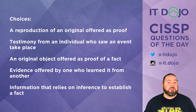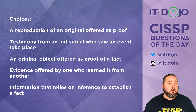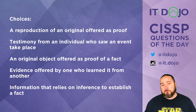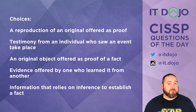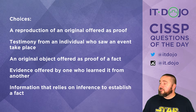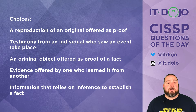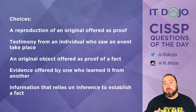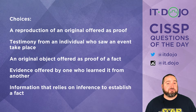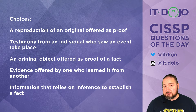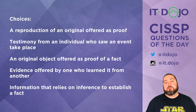The first choice says it is a reproduction of original evidence offered as proof — no, that definition is more appropriately aligned with secondary evidence. The next choice says it is evidence offered by somebody who saw an event take place — also not circumstantial; that's more akin to direct evidence.